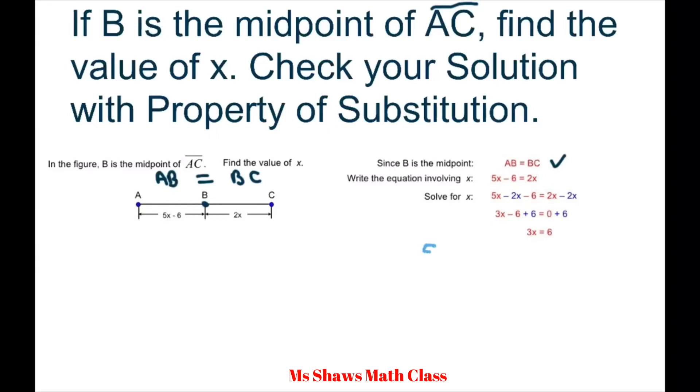We have 5X, which is AB. We're using substitution: 5X minus 6 equals 2X. I'm going to put plus 0 here. I'm going to subtract 2X from both sides and add 6 to both sides.